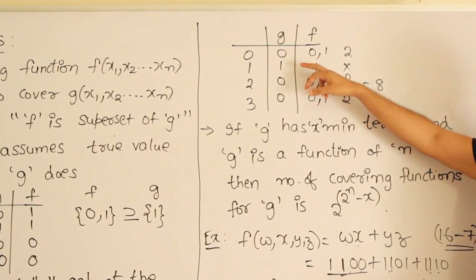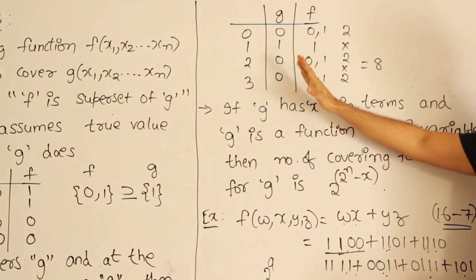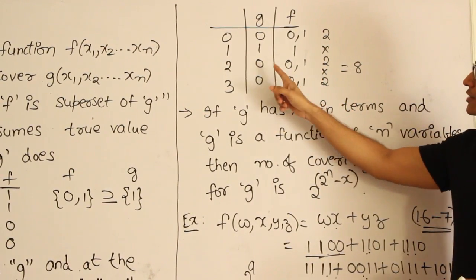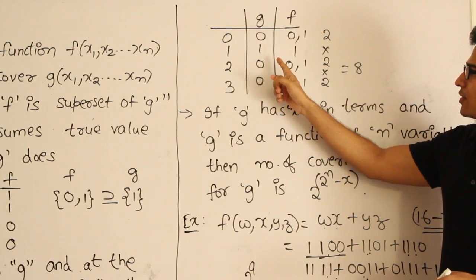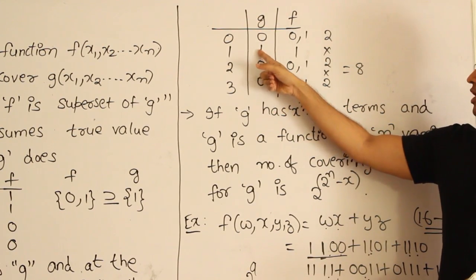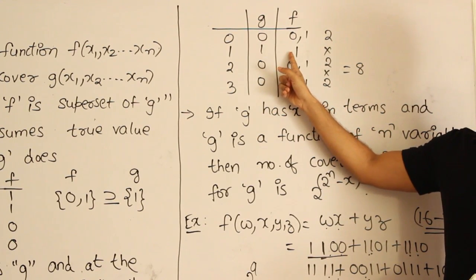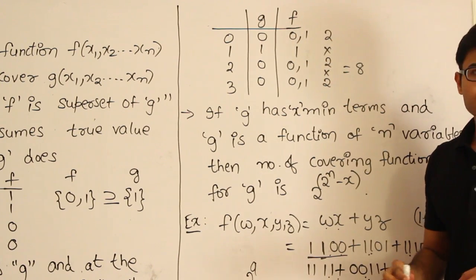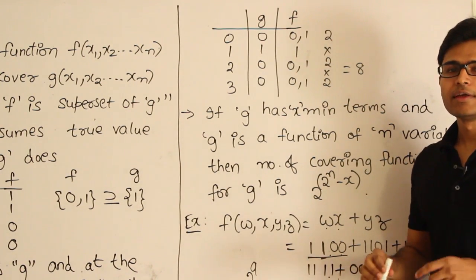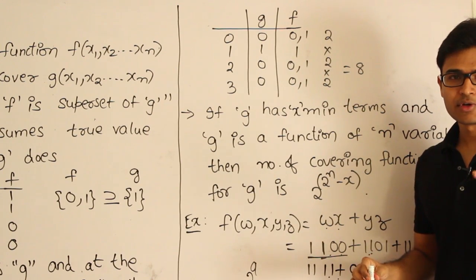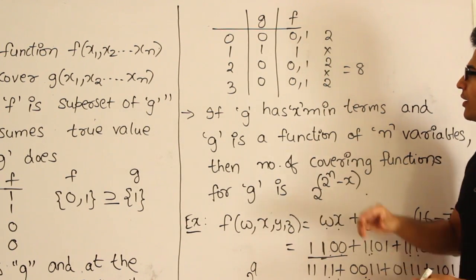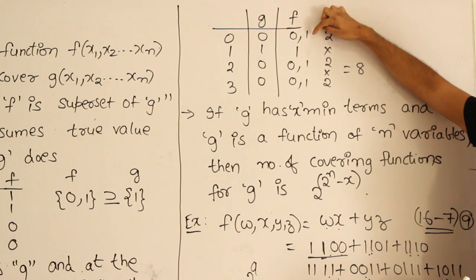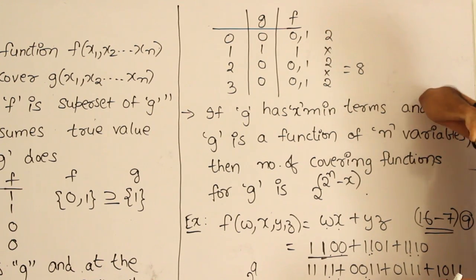Now let us say g is this. Then how many functions are possible which will cover g? In order to cover g, wherever g is having 1, we have to have 1 — therefore I have kept 1 here. And all the others are optional; in the other places either you could put 0 or 1. Therefore how many functions are possible for f covering g? In all the other possibilities we have 2 chances: 2 × 2 × 2, therefore 8 functions are possible.